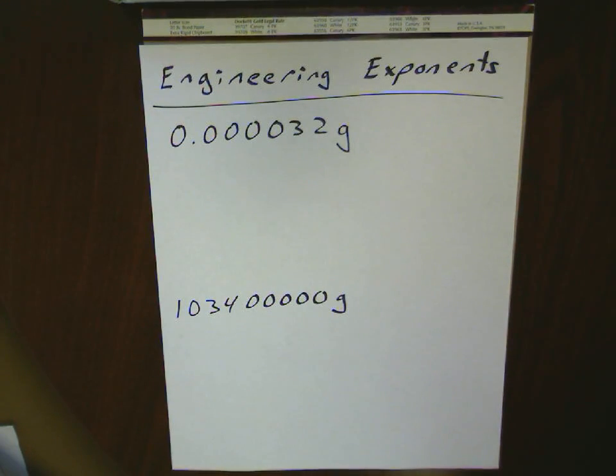Let me give you an introduction to something called engineering exponents. It's very closely related to scientific notation, but it makes use of the metric prefix system. It's really a method of taking really large or really small numbers and putting them into the most appropriate units using metric prefixes.